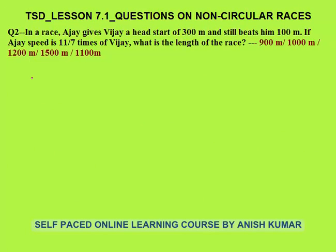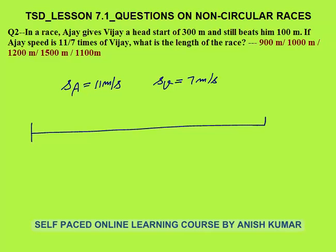Question 2: In a race, Ajay gives Vijay a head start of 300 meters and still beats him by 100 meters. Ajay's speed is 11/7 times that of Vijay. We can assume speed of Ajay as 11 meters per second and speed of Vijay as 7 meters per second. Vijay starts at 300 meters, Ajay starts at 0 meters — this distance is 300 meters.